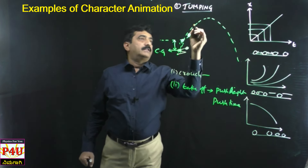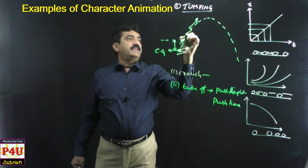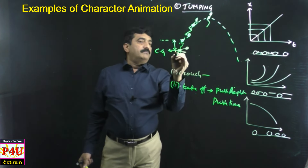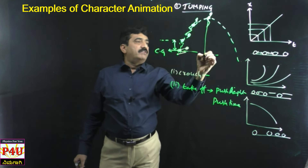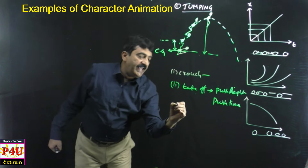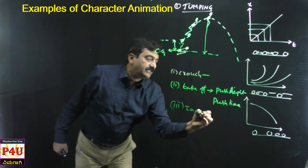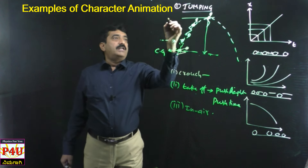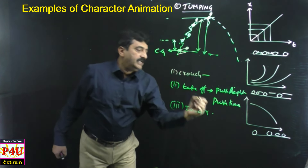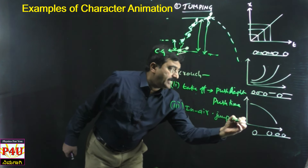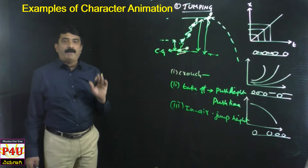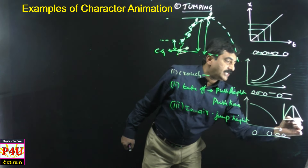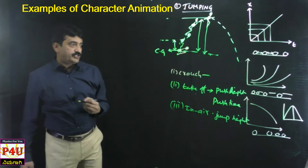Once she takes off, she moves in a parabolic path and is in the air. The third stage is the in-air stage. From the crouch position to the maximum height position, the distance covered is the jump height — similar to the maximum height in projectile motion. The process of going up is called ascending and coming down is called descending.